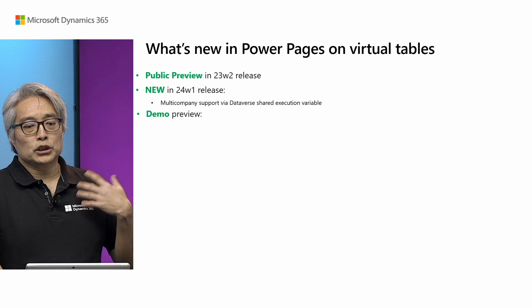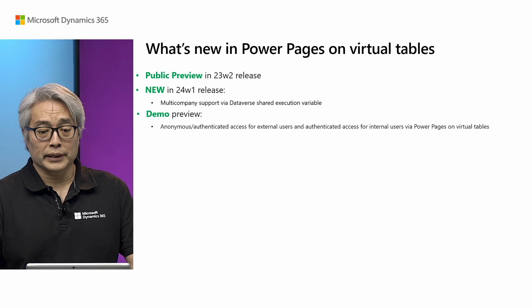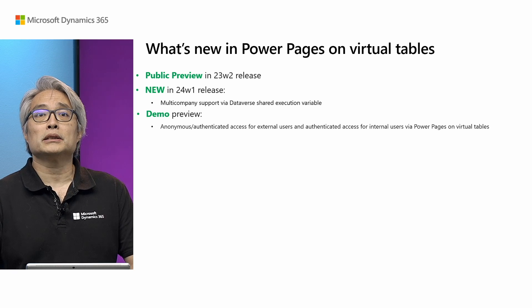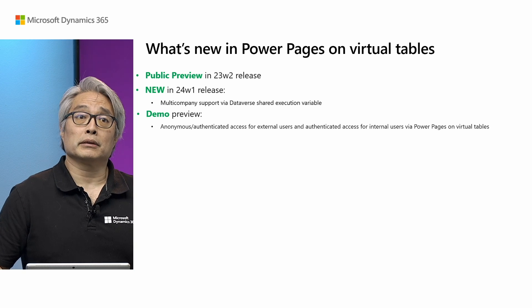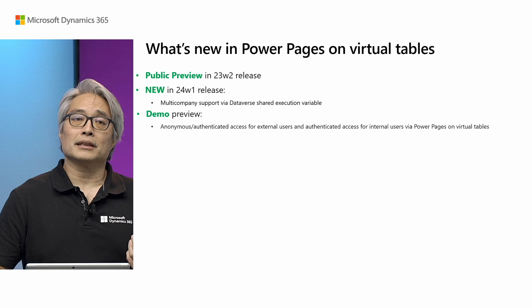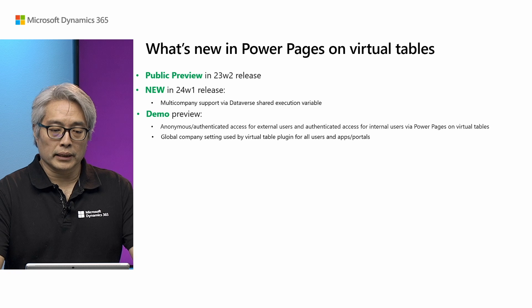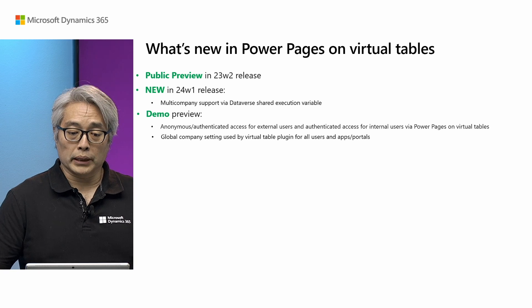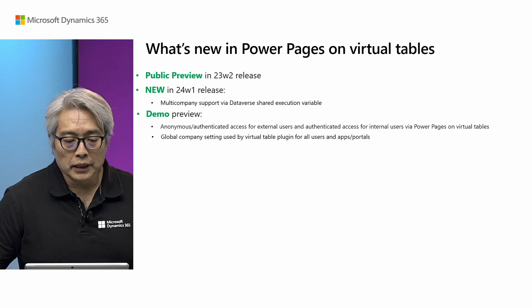In the demo, I will first review the access to Business Central data enabled by Power Pages on Virtual Tables — anonymous or authenticated access for external users, as well as authenticated access for internal users. Then I will show you the standard global company setting used by the Virtual Table plugin for all users and apps and Power Pages portals, and the standard user-specific company setting used by the Virtual Table plugin to override the global one.